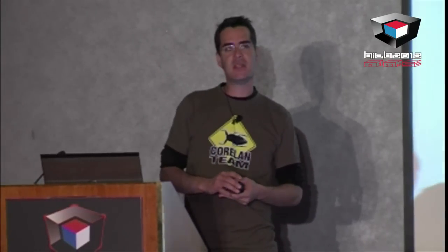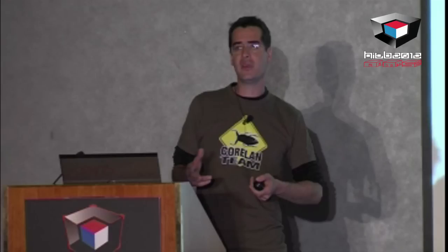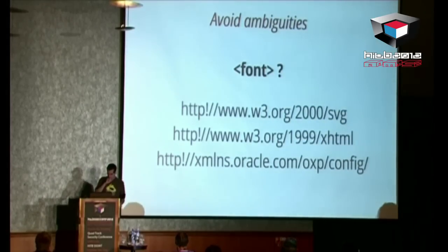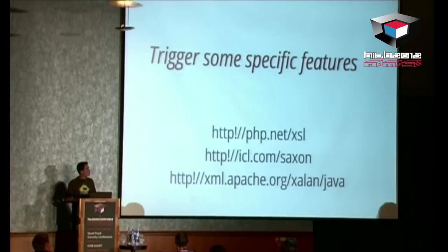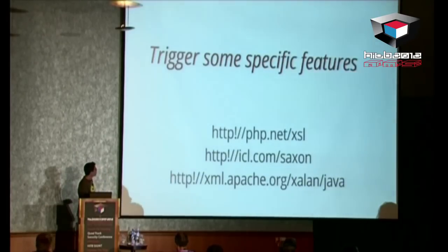The main use of namespaces is to avoid ambiguities. For example, if you find a font tag, you need to know if it's related to XHTML, to SVG, or to a very specific Oracle configuration file. But there is more interesting stuff for attackers — you can use certain namespaces to trigger very specific features. For example, one can be used to call PHP code from XSLT. Another can be used to create files in the libXSLT parser, which is used in WebKit — I published that vulnerability last year, where you can create a file on the client's hard drive. And a third is used in XalanJ to execute Java code from XSLT.